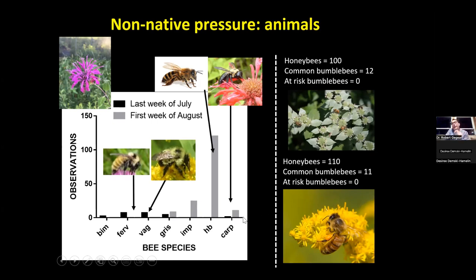Putting honeybees on conservation land thinking it's helping conservation is way off. Honeybees are extremely important in agriculture and agriculture only. There is no native plant that depends on a honeybee for pollination. Helping the environment by putting honeybees in your backyard is simply untrue.